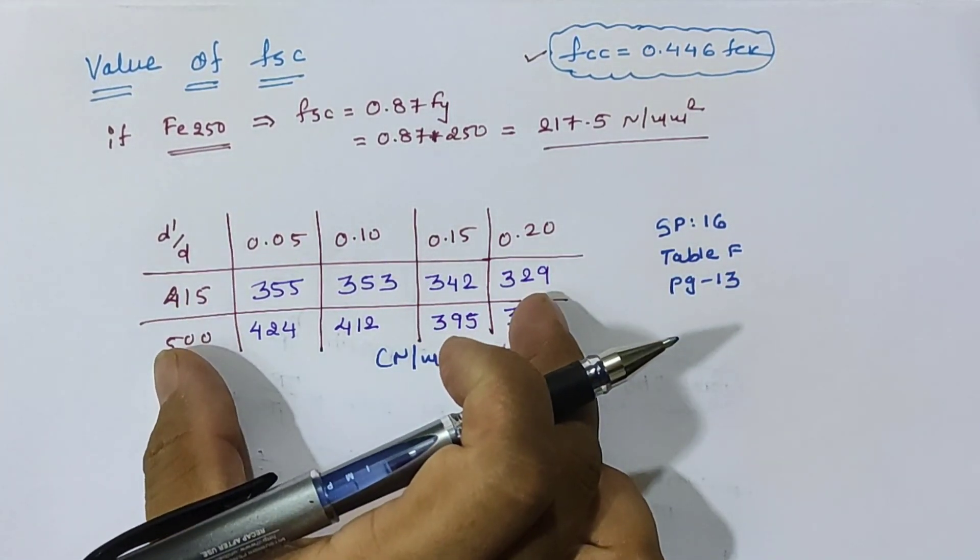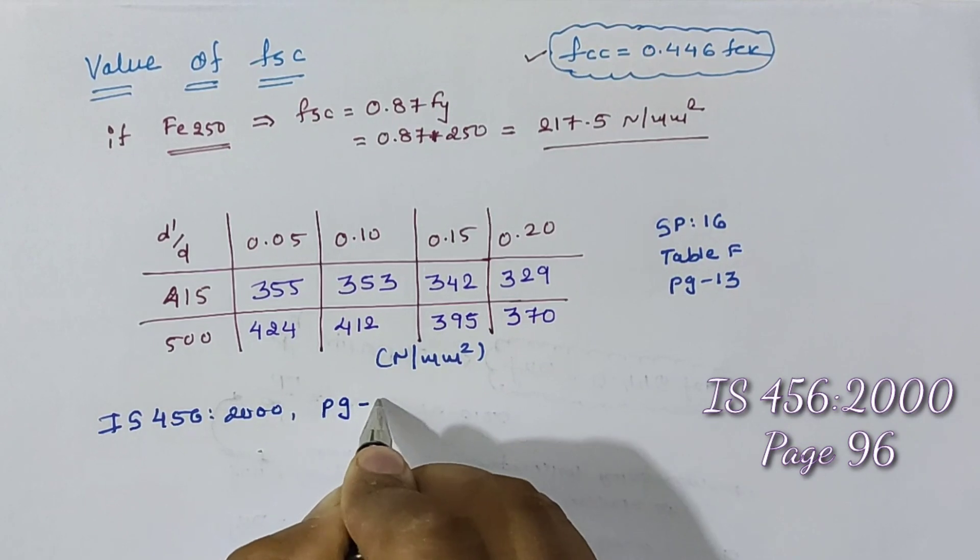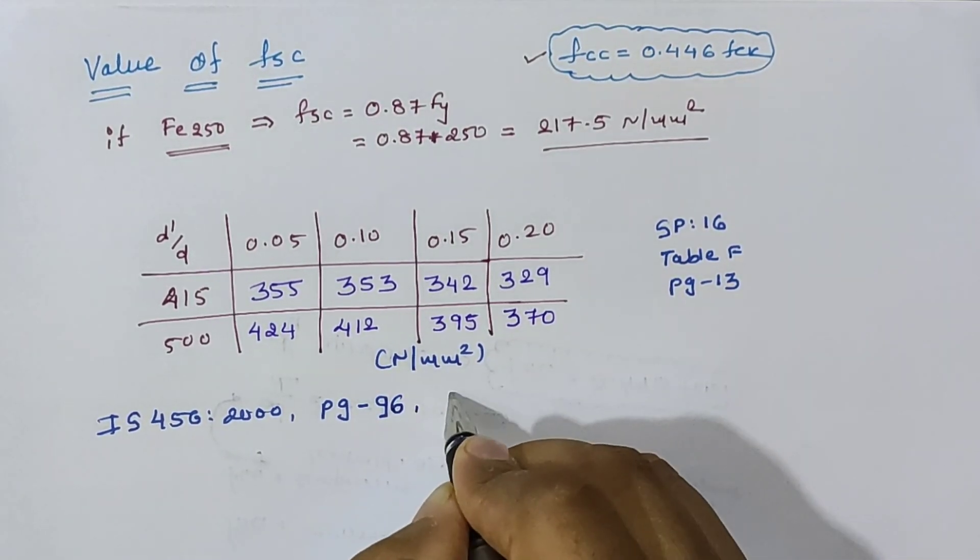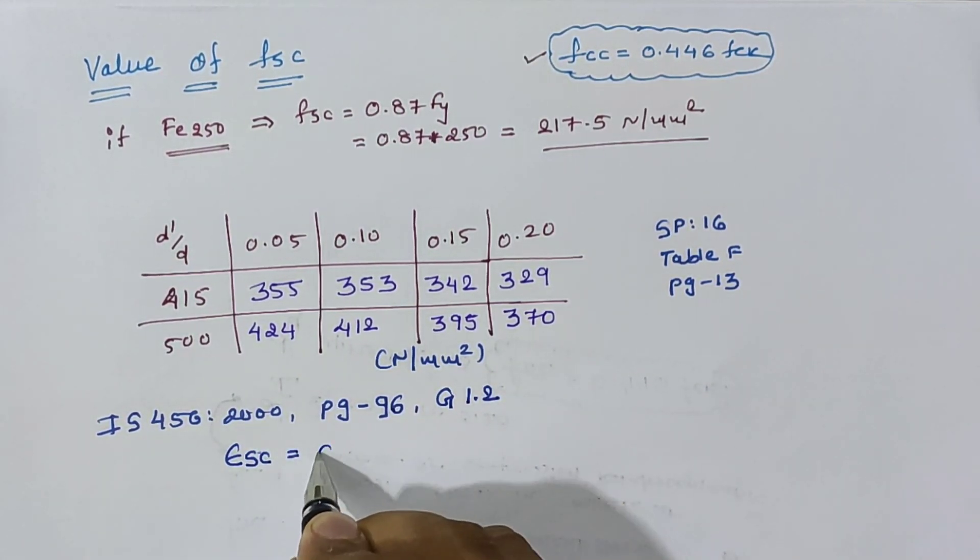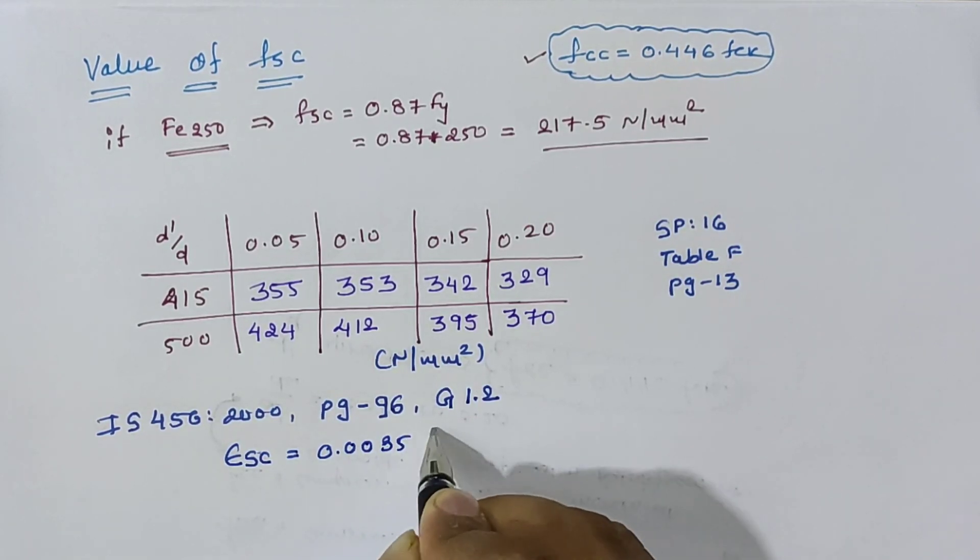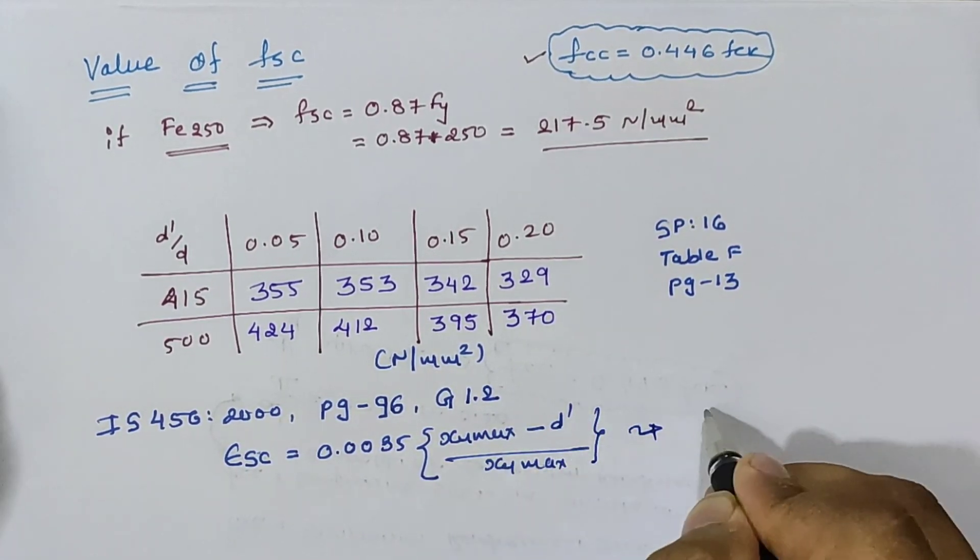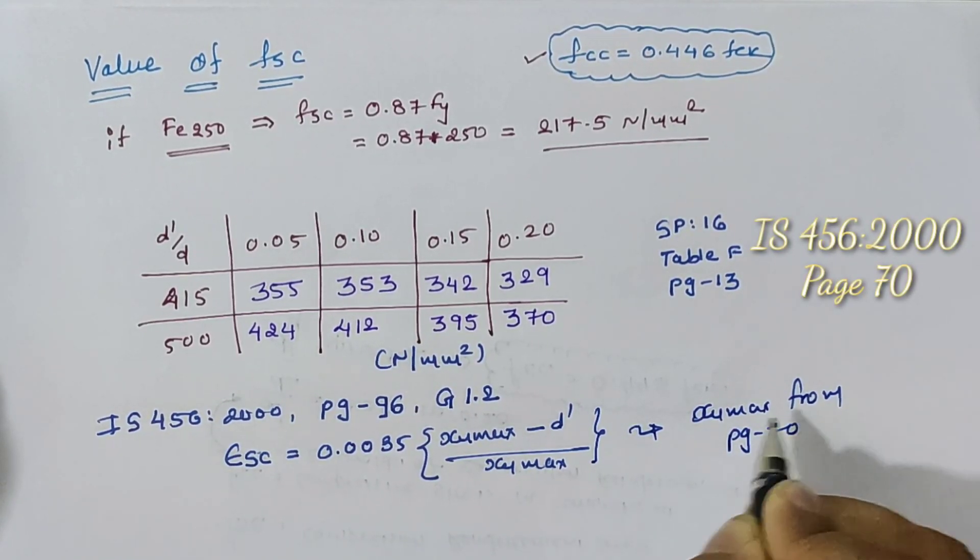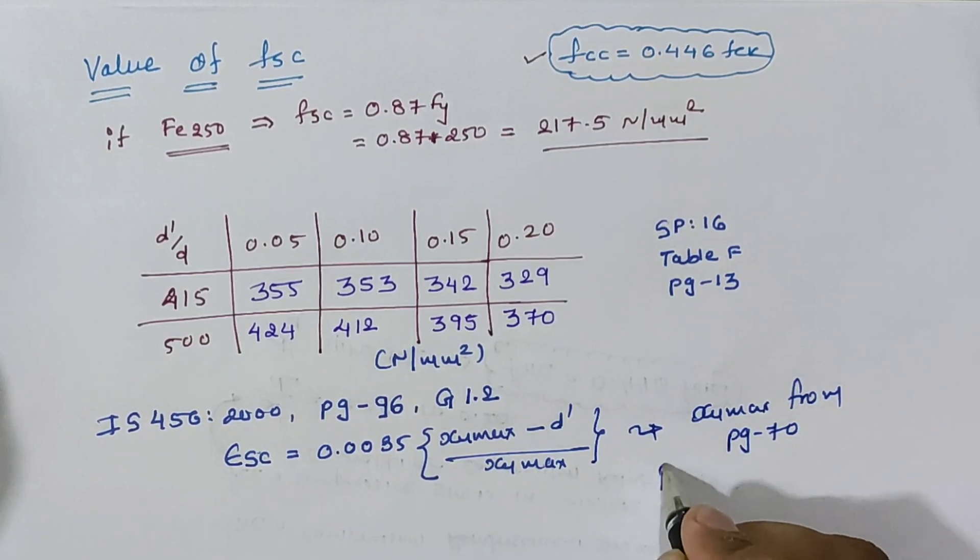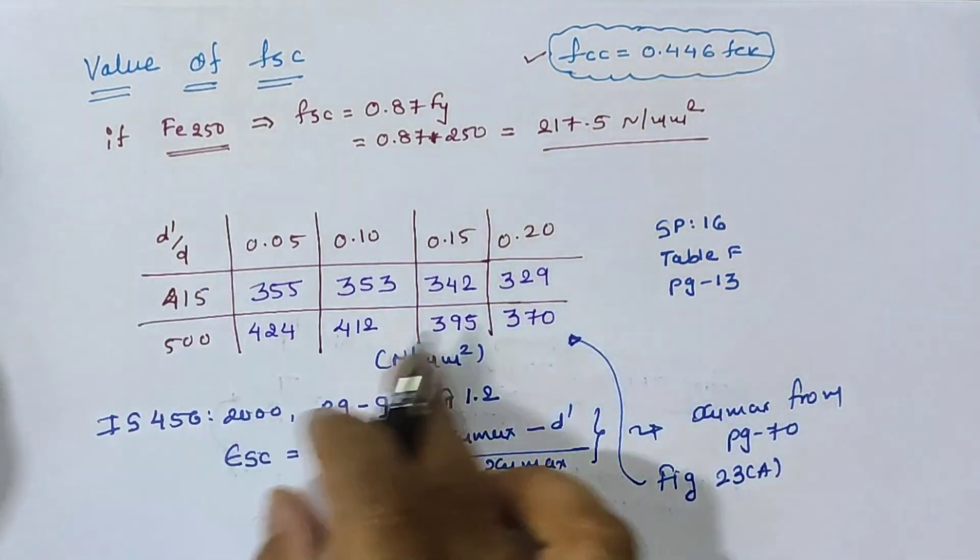This value of fsc comes from IS 456:2000, page number 96, according to clause Z1.2. The value is given as Esc = 0.0035 times (xu max - d') by xu max. Calculate the value of xu max from page 70 of IS 456:2000.